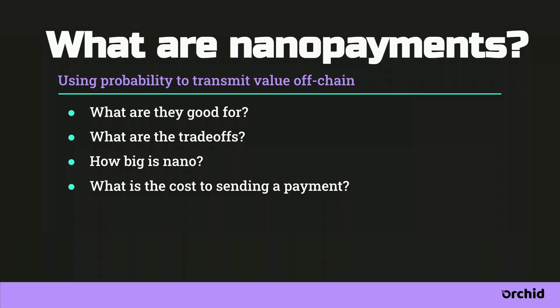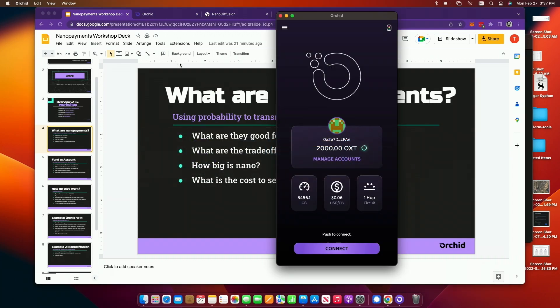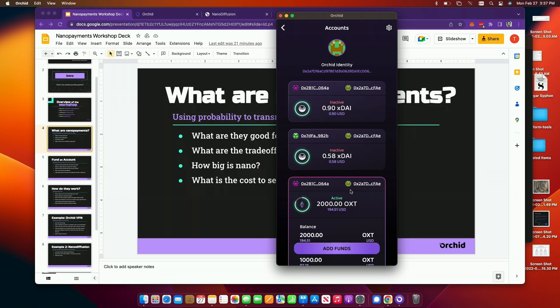What are the costs of sending the payments? It really depends on the L1 that you're on. On Gnosis, which we like to use a lot, it's like a couple pennies per transaction, which is really nice. Ethereum obviously depends on what's happening on the network. In our DAP we have this notion of efficiency when you look at an account. What that really means is: when the provider goes to claim money from this Orchid account, the efficiency is how much in gas costs they can expect to pay. When the provider gets a winning lottery ticket, they have to go into your nano payment account and pull the money out.